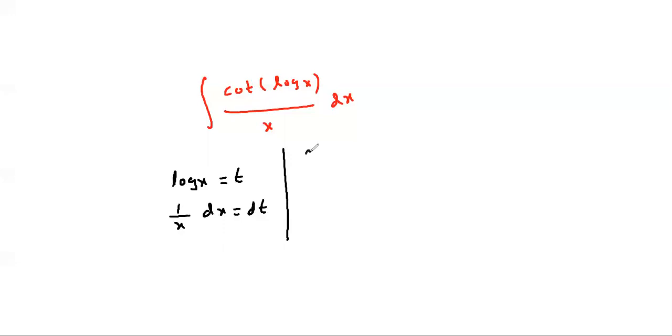Now convert the given question into t. Cot in place of log x, write t cot t. Now dx by x, that is dt.